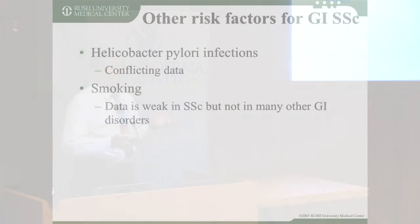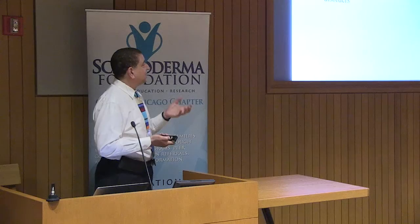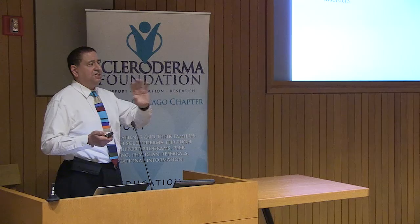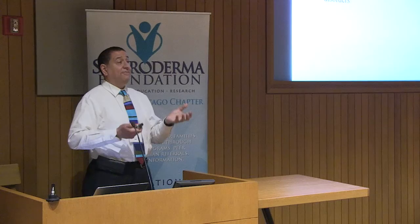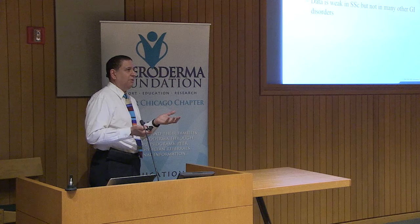There's conflicting data on Helicobacter pylori — the germ that causes ulcers — and its role in scleroderma risk. One study shows increased risk, another shows none, and this has been debated since the late 1980s. I wouldn't chase Helicobacter just because a patient has scleroderma, but if it's found on endoscopy or a stool test, go ahead and treat it — there's no reason to have it in your stomach. It's a pro-carcinogen that increases the risk of stomach cancer.